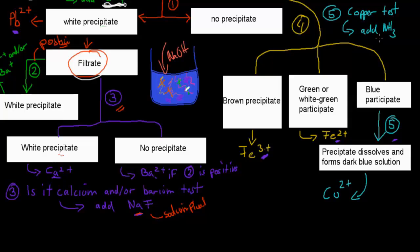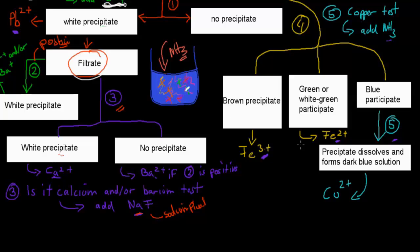For step five, we're going to add some NH3, which is ammonia. We focus on the blue precipitate that formed in step four. We add ammonia into that solution and see what happens. If the blue precipitate dissolves to form a dark blue solution, that means copper is present.